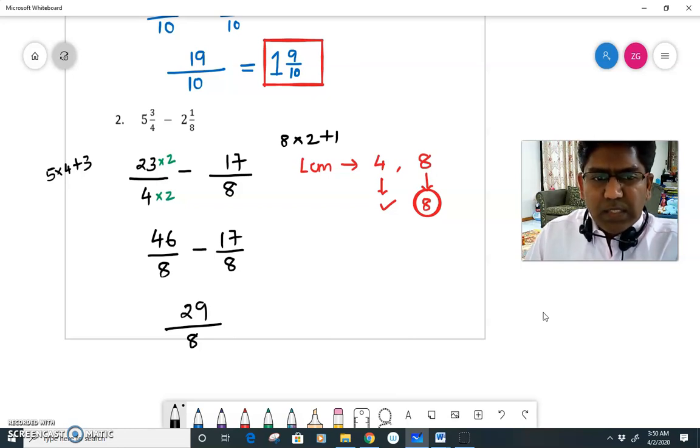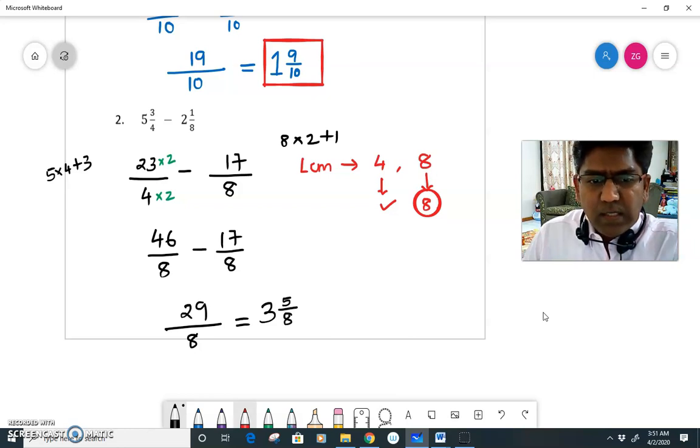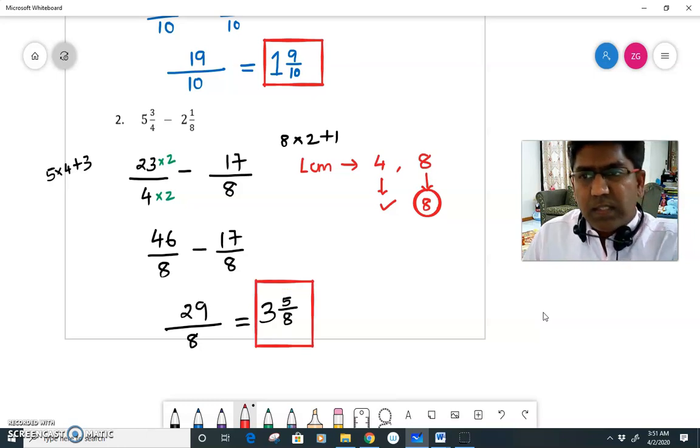And again, my answer is an improper fraction. So I will express it as a mixed number. So from 29, how many times can we take 8? So I can take 8 three times because 8 times 3 is 24 and 8 times 4 is 32, so not possible. So I can take 8 from 29 three times. So 8 times 3 is 24. When I take away 24, I am left with 5. So I write the remainder here 5 and 8 as it is. So this is my final answer. That's it.